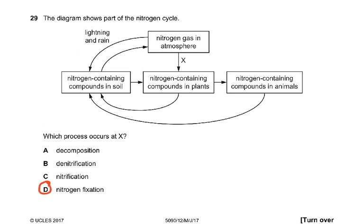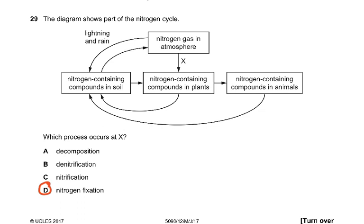Question 29: the diagram shows part of the nitrogen cycle. There is lightning and rain, nitrogen gas in the atmosphere, nitrogen-containing compounds in the soil, and nitrogen in plants. The process at X — from nitrogen gas in air to nitrogen in plants — is nitrogen fixation. Decomposition results in formation of ammonia; denitrification returns nitrogen gas; nitrification results in nitrates being formed from ammonium compounds to nitrites, then nitrites to nitrates.